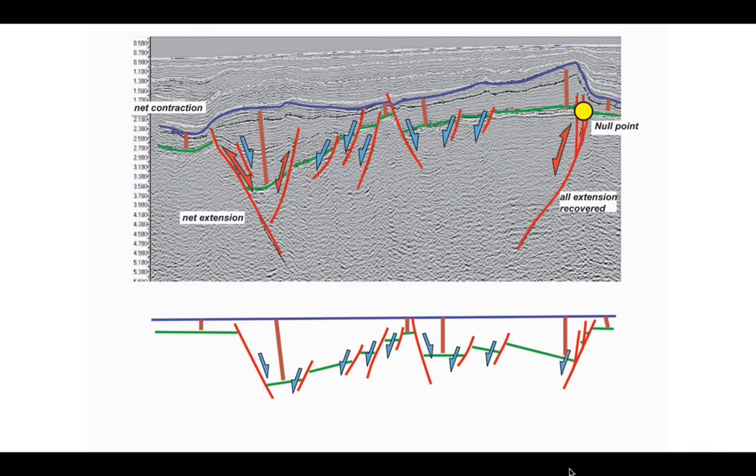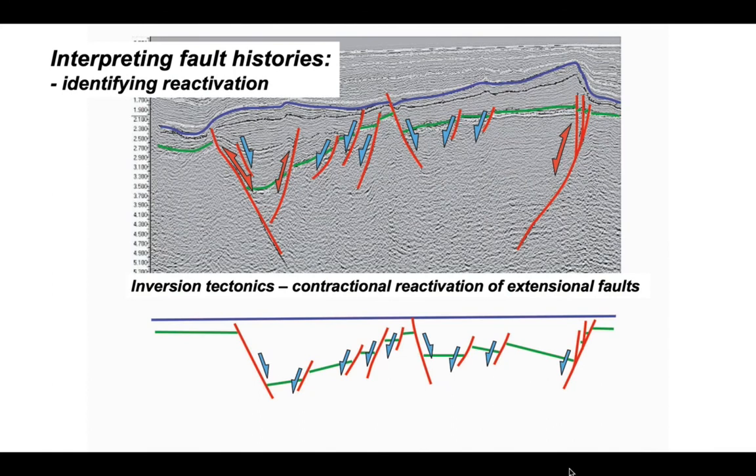We conclude that our sedimentary basin has been compressed after it formed, but that compression is only replayed on three of the original faults, leaving many of the old normal faults still in their original state, not reactivated. The amount of reactivation on the three faults that have moved varies. On the right, all the original extension has been recovered. On the left, only part of that original extension has been recovered.